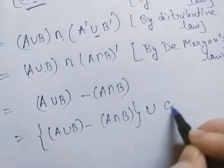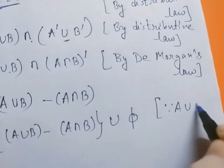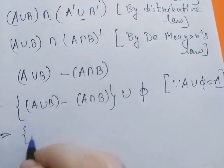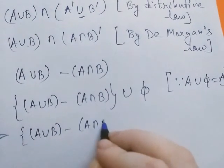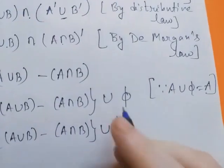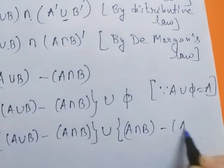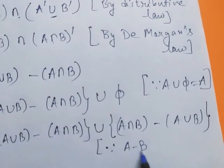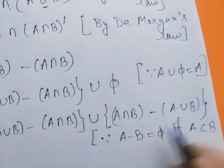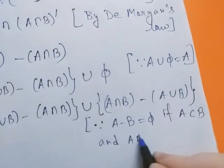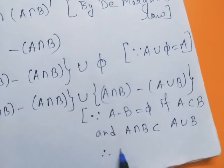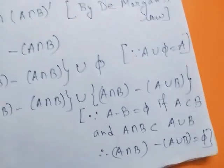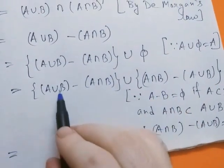We write (A ∪ B) − (A ∩ B) as (A ∪ B) − (A ∩ B) ∪ φ, since A ∪ φ = A for every set. This equals (A ∪ B) − (A ∩ B) ∪ (A ∩ B) − (A ∪ B). Since A − B = φ when A is a subset of B, and A ∩ B is always a subset of A ∪ B, therefore (A ∩ B) − (A ∪ B) = φ.